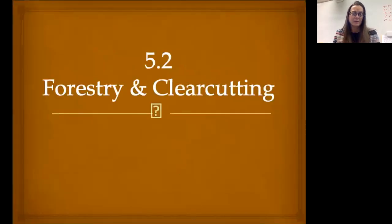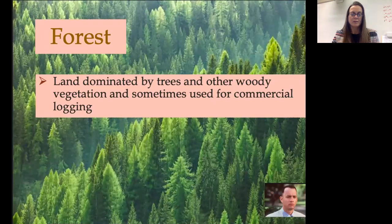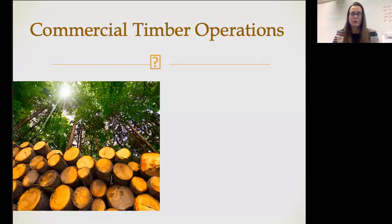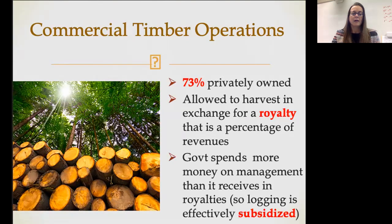So forestry — we'll specifically talk about clear cutting and sustainable forestry. When we talk about a forest, we're talking about a land that is dominated by trees and other woody vegetation, frequently used for logging as well as for lots of different recreational purposes. 73% of commercial timber operations are privately owned and are allowed to harvest from publicly owned land in exchange for a royalty that is a percentage of revenues. The government spends much more money on management than it receives in royalties, so just like grazing, logging is subsidized by the taxpayers.